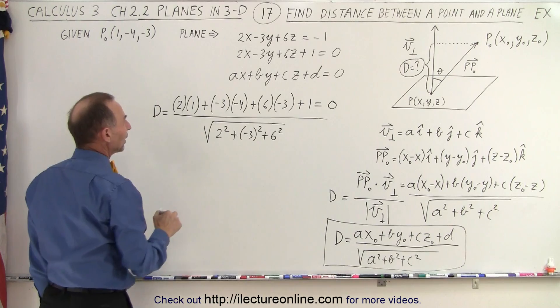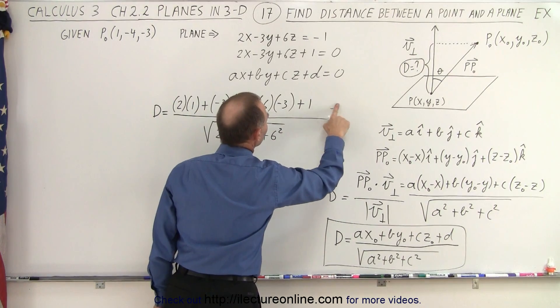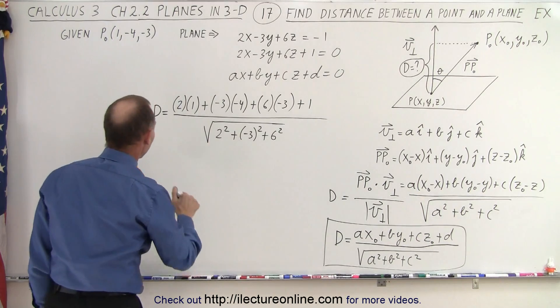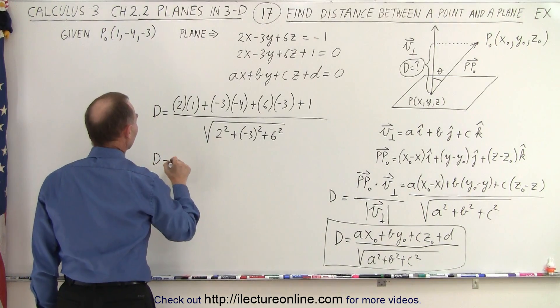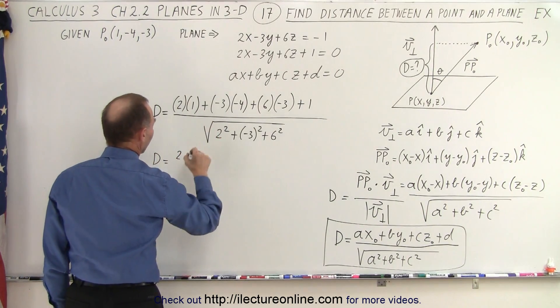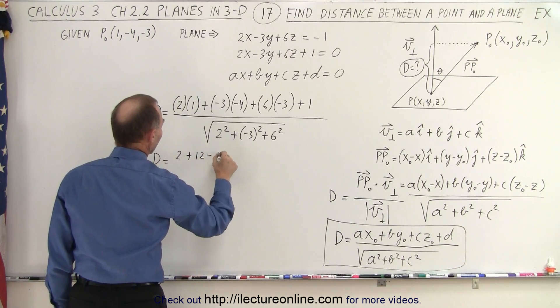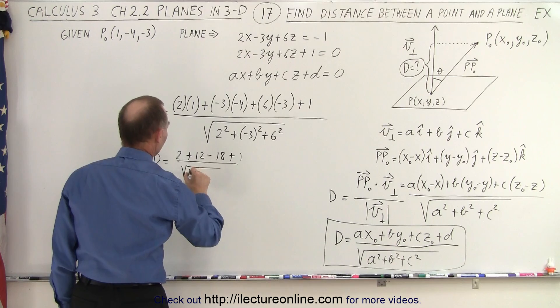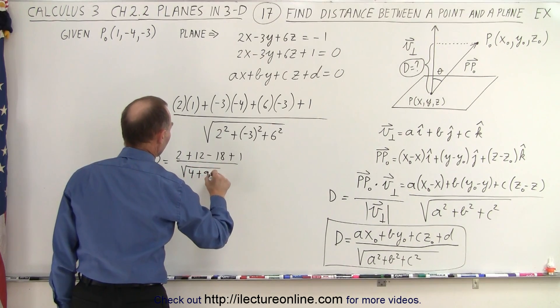All right, simplifying this, what do we get? And of course, we don't want to write equal to 0, that doesn't belong there. Okay, so we have d is equal to 2 plus 12 minus 18 plus 1, all divided by the square root of 4 plus 9 plus 36.